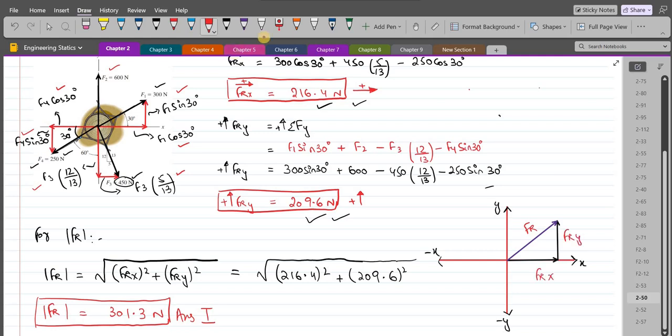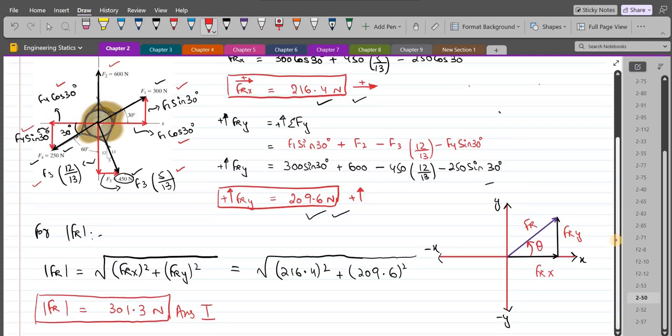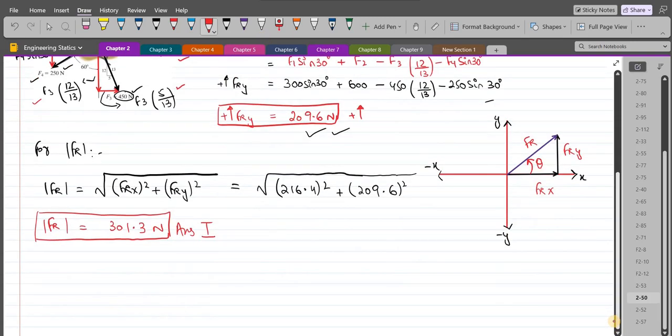Since we have to measure the direction counterclockwise from the positive x-axis, we have to measure this angle. Let's call this theta. We can calculate the angle theta using trigonometric ratios. Tan theta equals opposite, which is FRy, over the adjacent, which is FRx, and we just have to use their magnitudes.